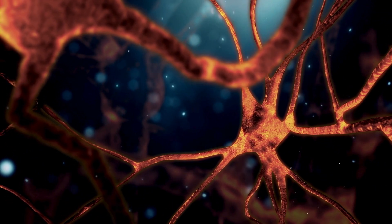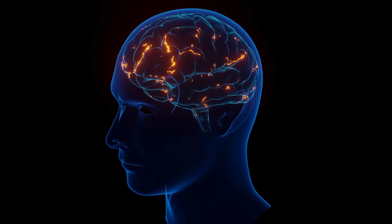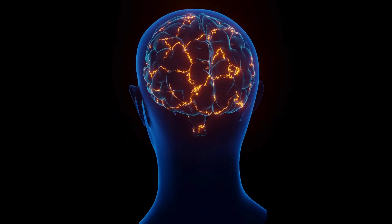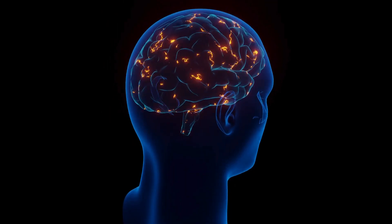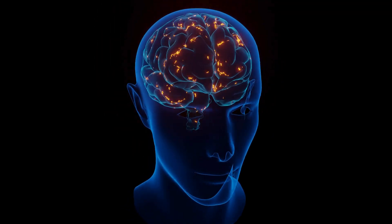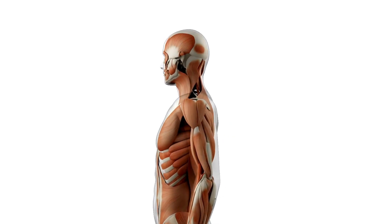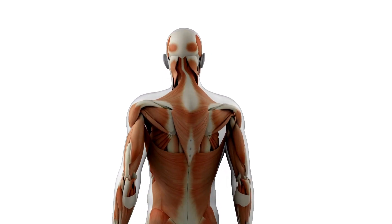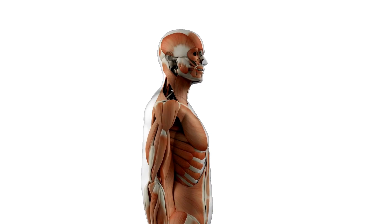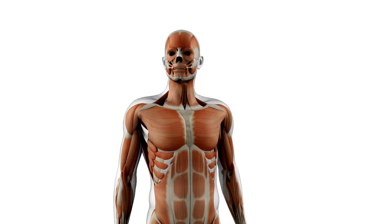For example, nervous tissue, including neurons in the brain and spinal cord, typically does not undergo mitosis in adults. Similarly, mature muscle cells have limited mitotic capacity. In these tissues, regeneration primarily relies on the activity of stem cells.